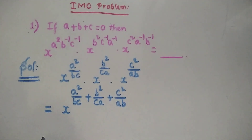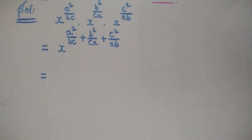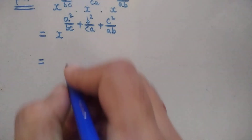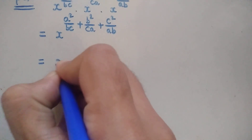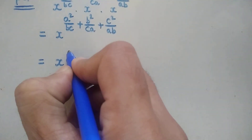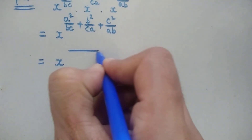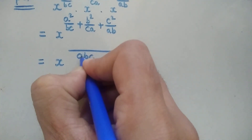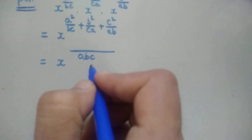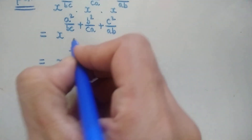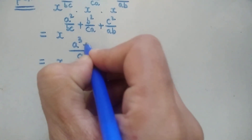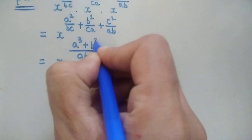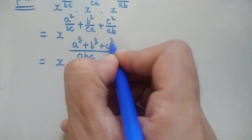We can simplify by taking the LCM of the denominators. The LCM is abc, and in the numerator we get a³ + b³ + c³.